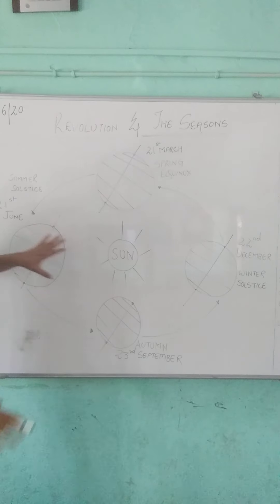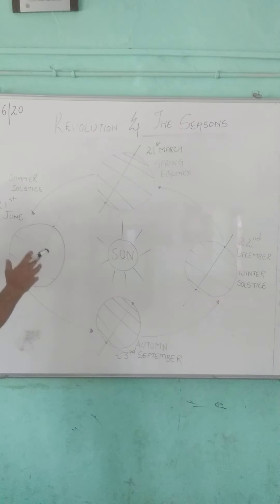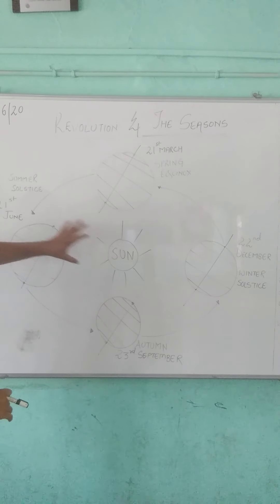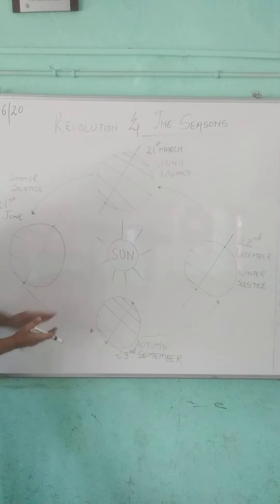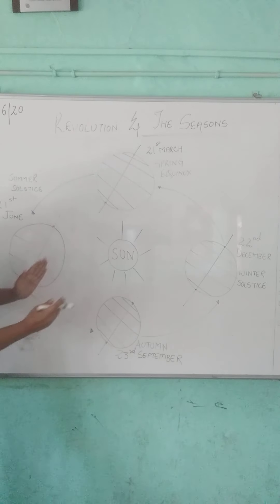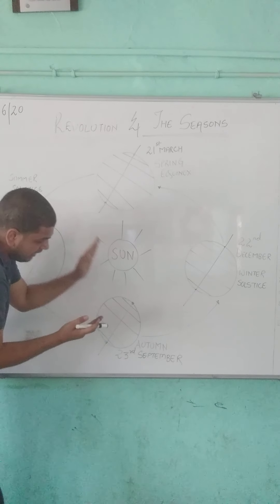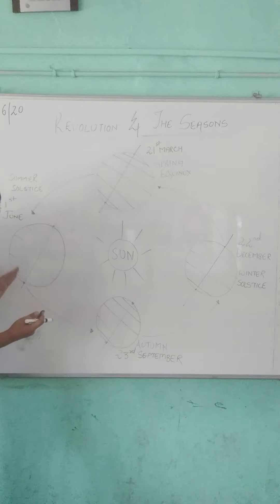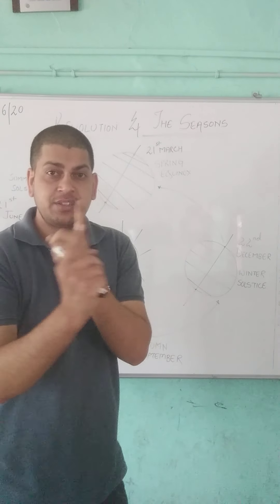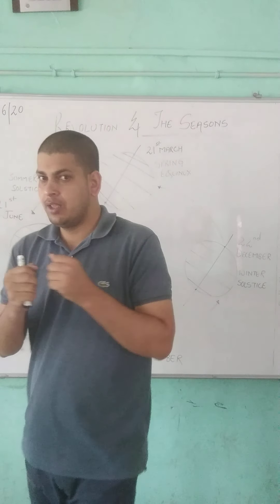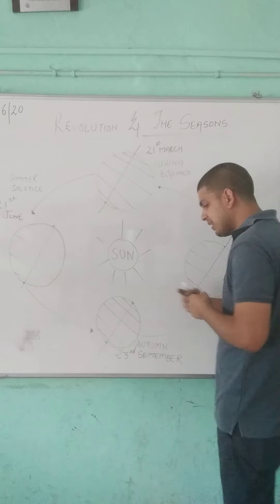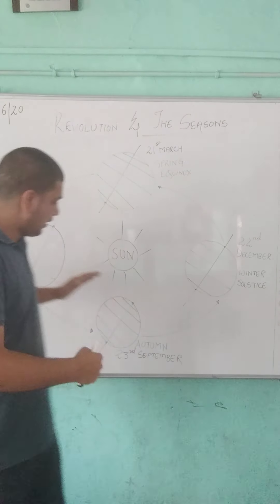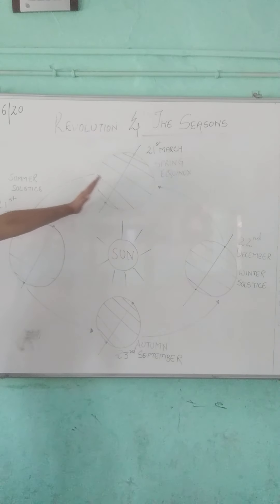Now if you observe this diagram carefully, it shows that the earth moves in an elliptical orbit. The key thing to notice is that the inclination of the earth is the same in all four positions — the earth is tilted or inclined towards the same direction, and while inclined, it is also rotating. Rotation is the motion of the earth on its own axis, while revolution is the motion of the earth around the sun.